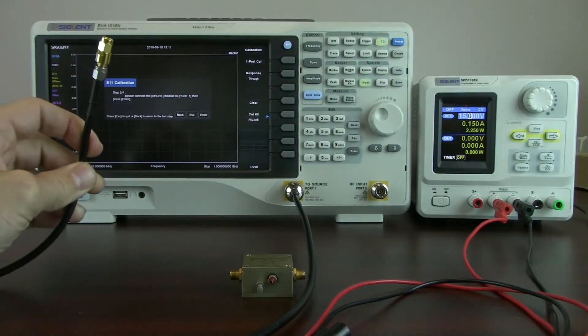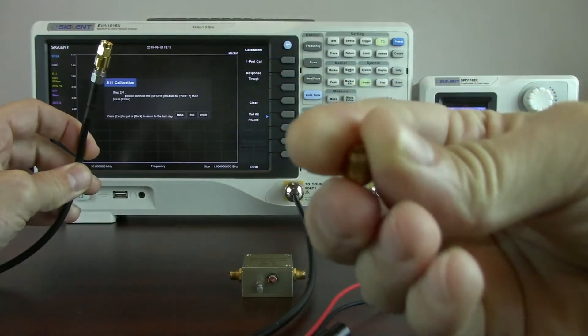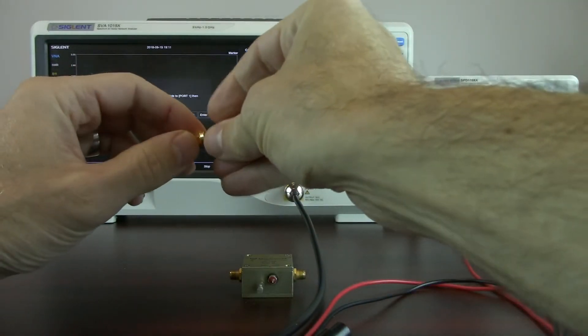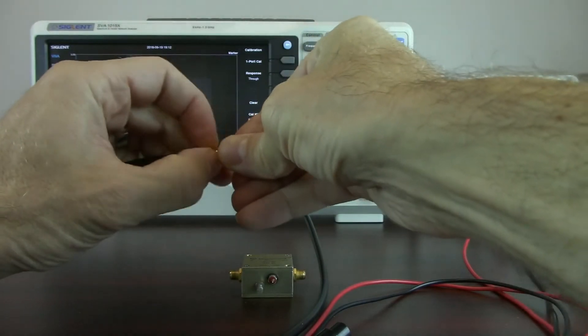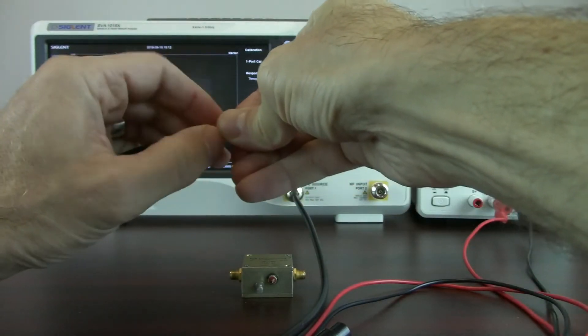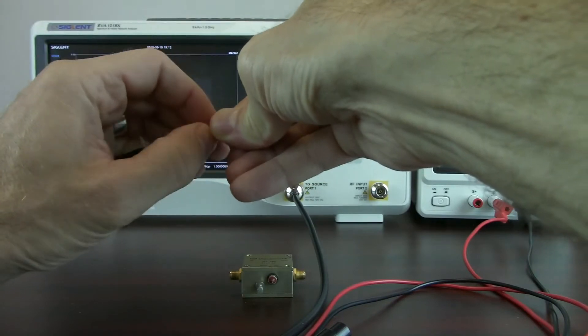Now it says to short. So I've purchased and already characterized this SMA short. Again, I'm holding the short and I'm rotating the hex connection here for the adapter.